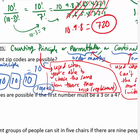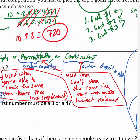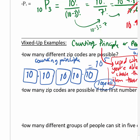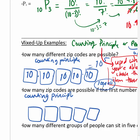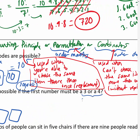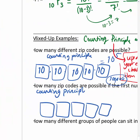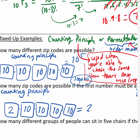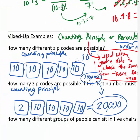How many zip codes are possible if the first number must be a 3 or a 4? Still using the counting principle since you can repeat digits. The first digit only has 2 choices (3 or 4), but the other four digits can still be any of 10. So it's 2 × 10 × 10 × 10 × 10 = 20,000. That drastically reduces the possibilities just because you constrained the first digit.